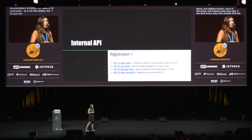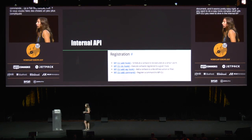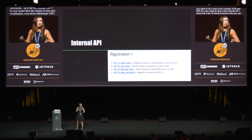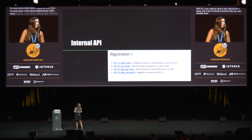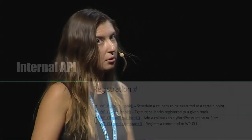If you want to do way more complex stuff with WP-CLI, you need to dive into the internal API. There are tons of handy functions — you can handle errors, bring success messages for your users, and much more — that you can use in your commands to automate workflows, import data, or whatever exactly you need to do.